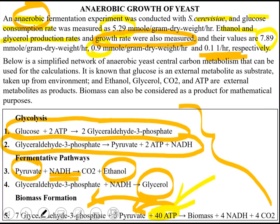We are asked to predict the rates of this system using this simple metabolic network. Glucose is an external metabolite taken from the environment. Ethanol, glycerol, and carbon dioxide are external metabolites. Note there is a typo regarding ATP. Biomass can also be considered as a product for mathematical purposes.